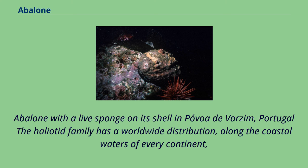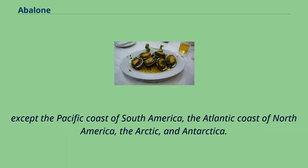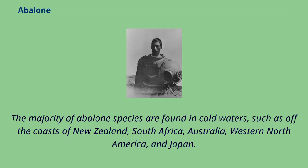The Haliotidae family has a worldwide distribution along the coastal waters of every continent, except the Pacific coast of South America, the Atlantic coast of North America, the Arctic, and Antarctica. The majority of abalone species are found in cold waters, such as off the coasts of New Zealand, South Africa, Australia, western North America, and Japan.